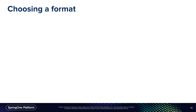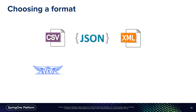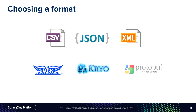When we start choosing formats, these are the most popular ones today. CSV is still around — if you're doing integration, you'll see it. JSON, unfortunately, is still there. And XML, of course. Those are the text-based formats. Then the binary formats: Avro, Kryo, and Protocol Buffers. All of them have strengths and weaknesses, and we had to pick one for Spring Cloud Stream 1.1.